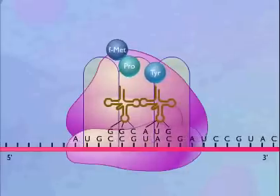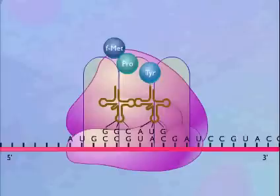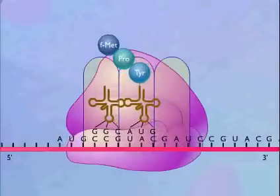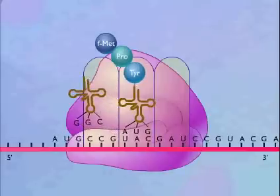As the shift occurs, the two amino acids on the transfer RNA in the P-site are transferred to the new amino acid and the second transfer RNA is released from the E-site.